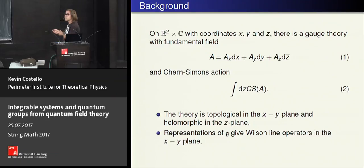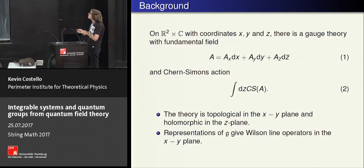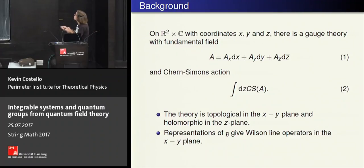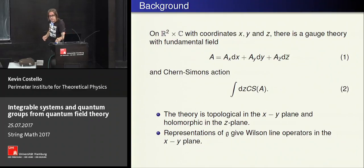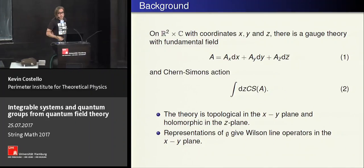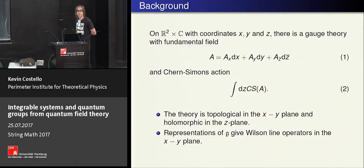We'll mostly be considering this theory on flat space, R² times C. The fundamental field is a connection with just three components — you can think of it as a four-component connection with an extra gauge symmetry that gauges away the z-component. The action is the Chern-Simons action, but hit with dz to make it into a four-form. This theory can be consistently defined at the quantum level, and it's topological in the xy-plane and holomorphic in the z-plane.